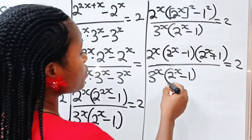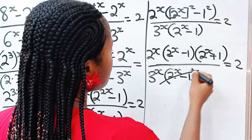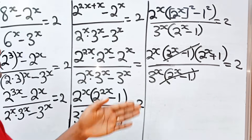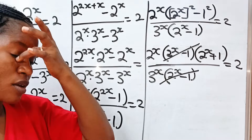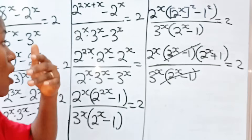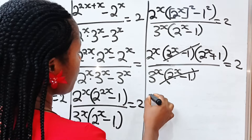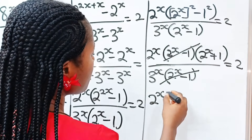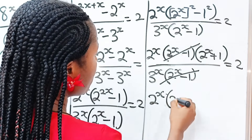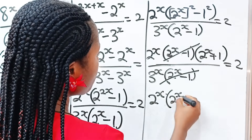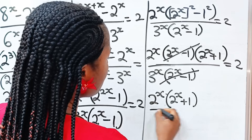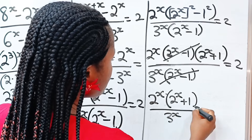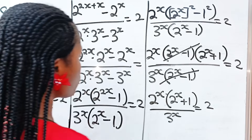We notice that we have 2 to the power of x minus 1 in both numerator and denominator, so they divide to give us 1. We are left with 2 to the power of x multiplied by 2 to the power of x plus 1, divided by 3 to the power of x, is equal to 2.